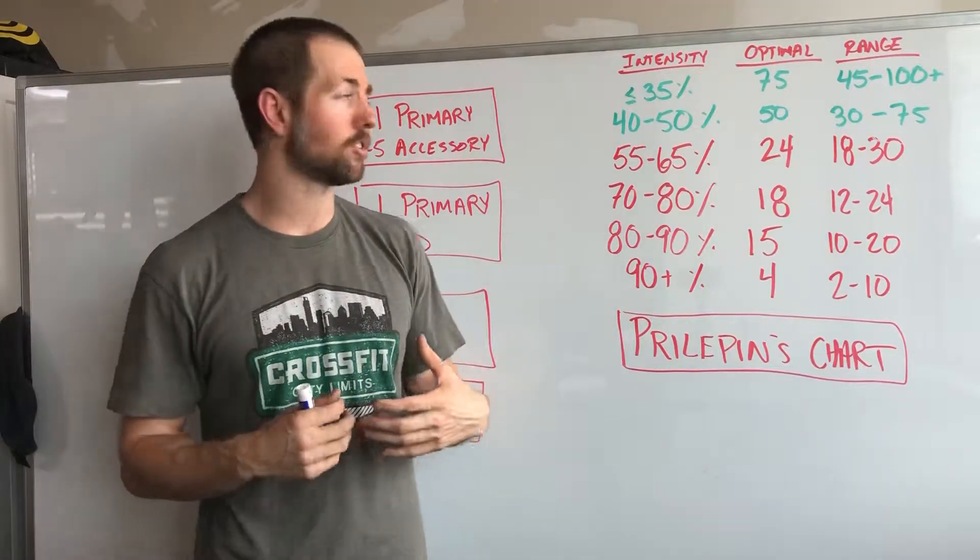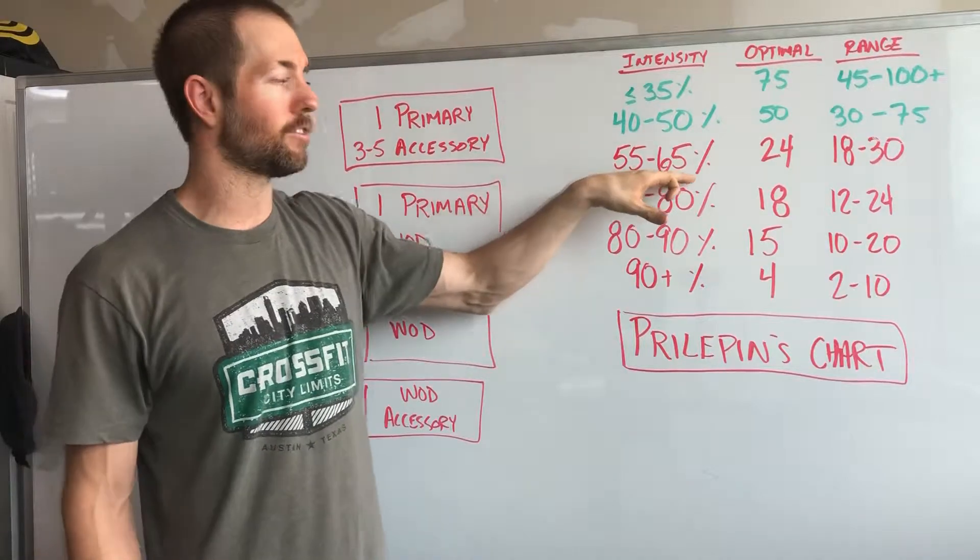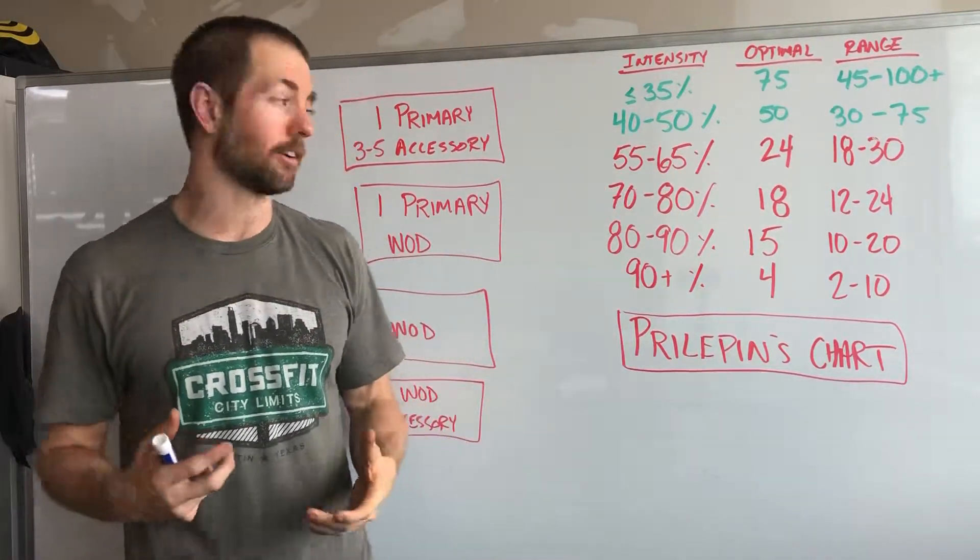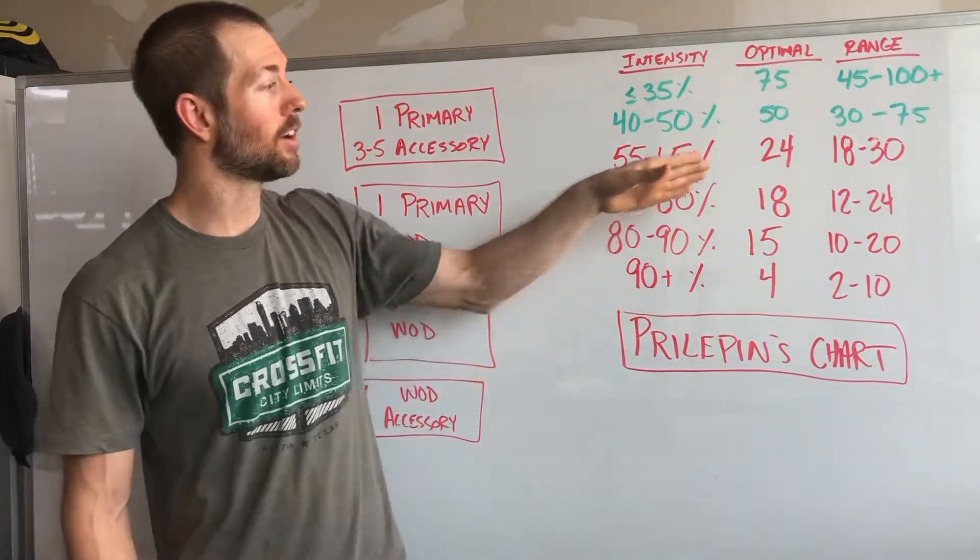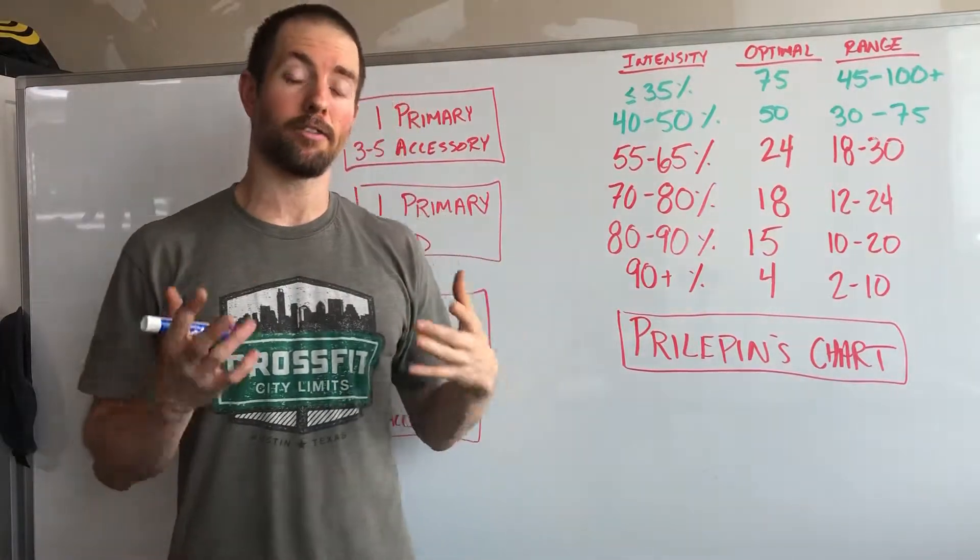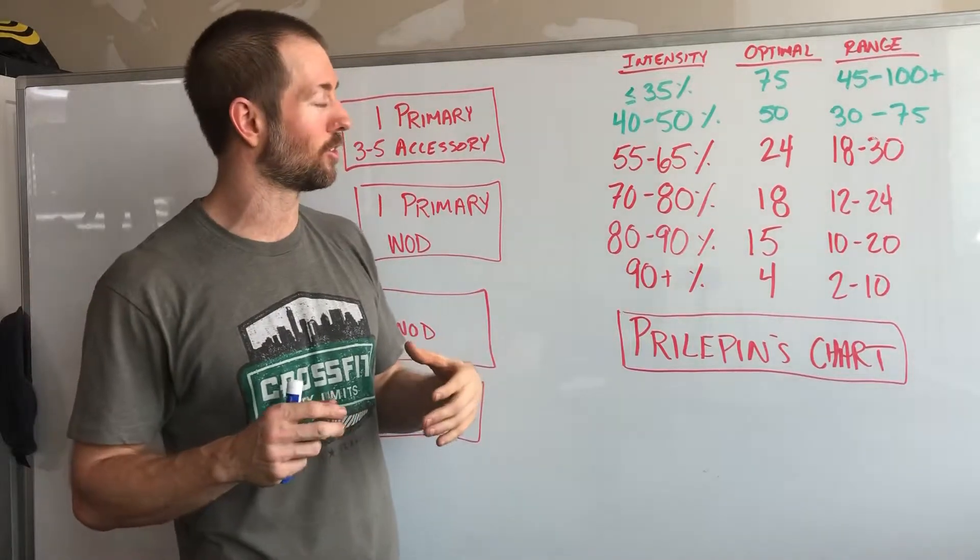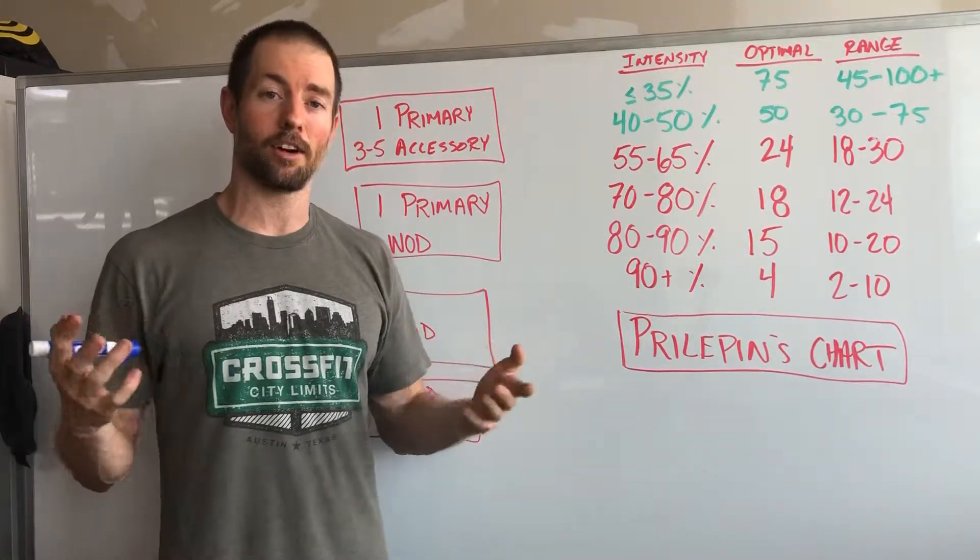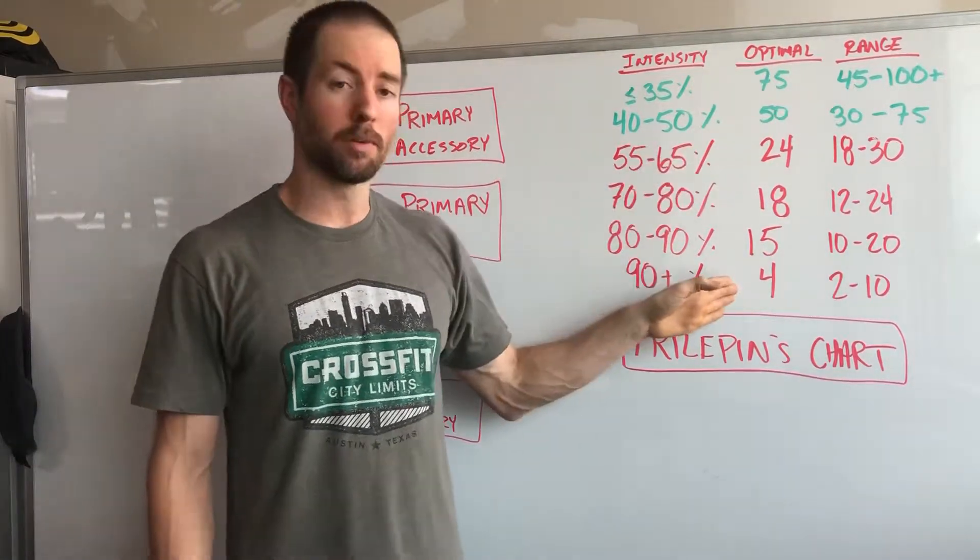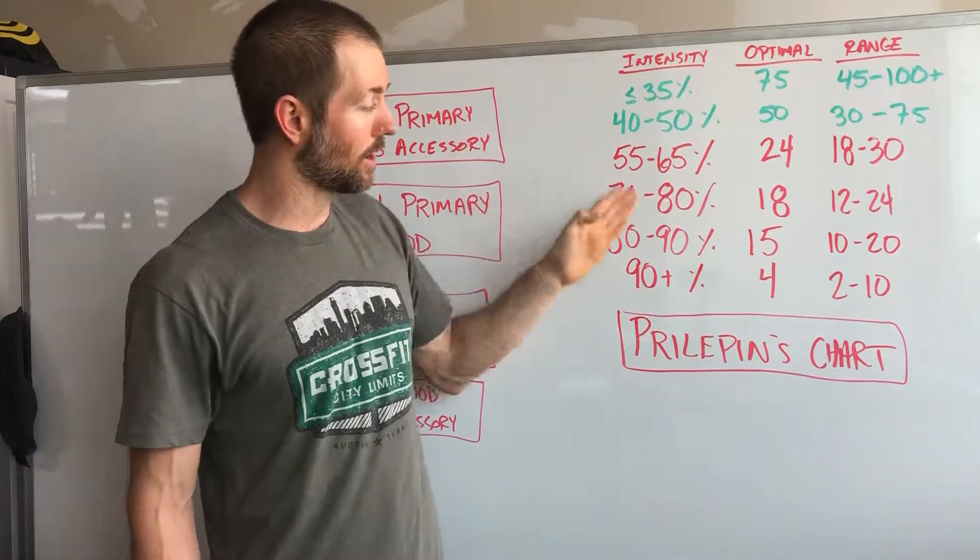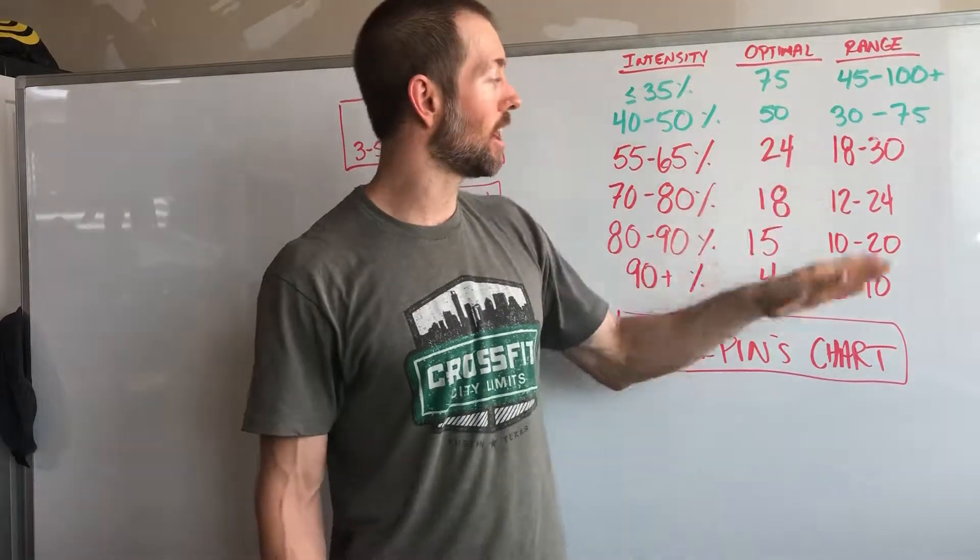So what Prilepin's chart shows us is it'll give us an intensity range: 50 to 65 percent, this is based off of your one rep max for a lift, 70 to 80 percent, 80 to 90 percent, 90 percent plus. Then it'll give you, based off of the data from 30 years with Olympic lifters at the elite level, what is the optimal number of reps that they did in these percentages and what is the total range on average.